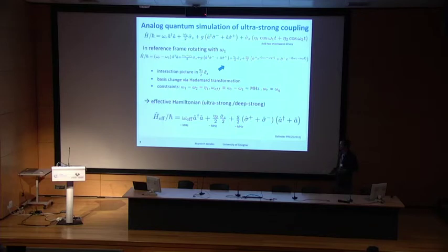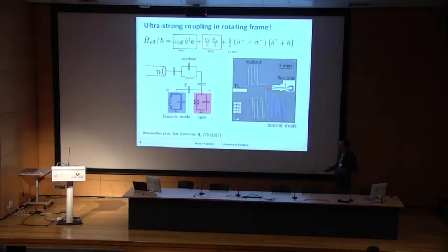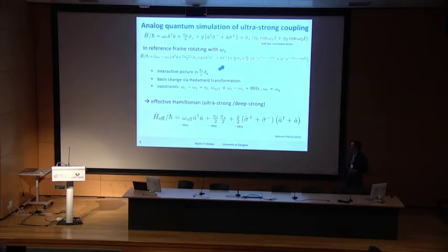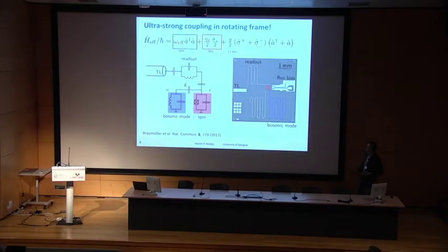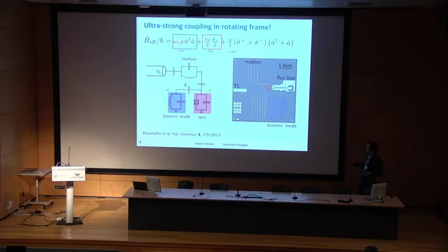Here's a picture of our experimental implementation. We start with our concentric transmon qubit coupled to a bosonic mode — a harmonic oscillator. The qubit is coupled to a readout resonator, which is coupled to a transmission line. There's a second bosonic resonator on chip, but we don't use it for this experiment.